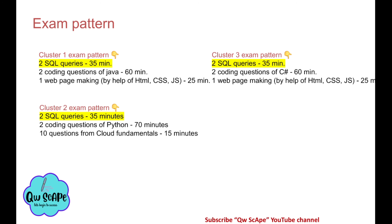Let's move forward. First, I want to tell the exam pattern for the technical assessment. For cluster one, there will be two SQL queries with 35 minutes, two coding questions for Java with 60 minutes, and one web page making question using HTML, CSS, and JavaScript for 25 minutes. Cluster three is the same as cluster one, just with C# instead of Java. For cluster two, there are two SQL queries (35 min), two Python coding questions (70 min), and ten cloud fundamentals questions (15 min).